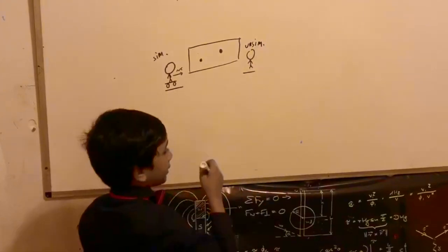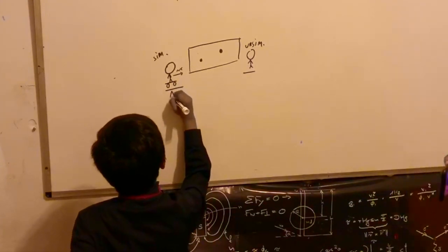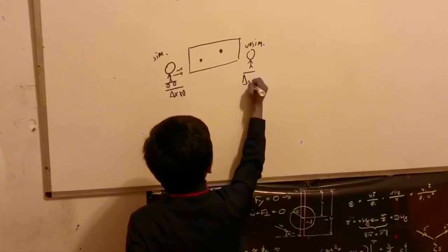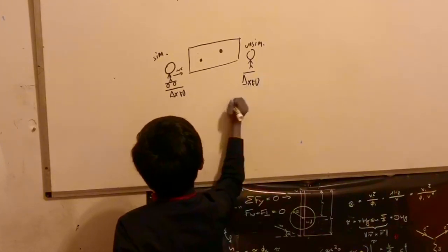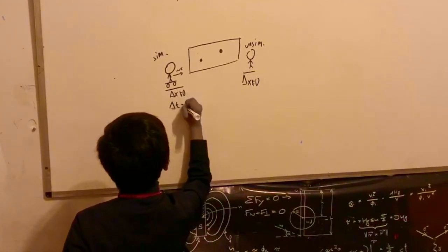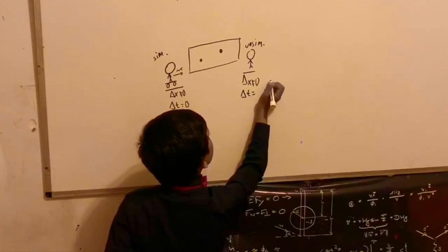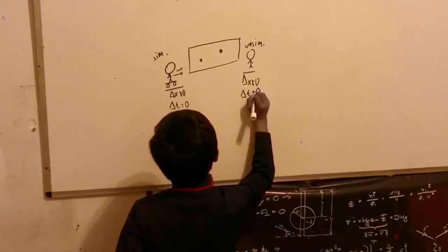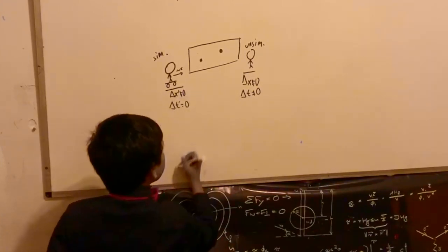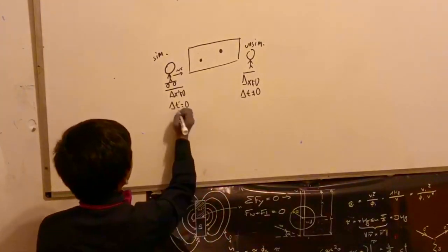However, for the person who is at rest, the person measures it as not simultaneous. This means that for both of them, delta x is definitely not going to be equal to zero. However, delta t is going to be equal to zero for one but delta t is not going to be equal to zero for the other. Let's call the one moving prime and the one not moving the unprimed observer.